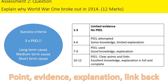Before we look at how to put this question together, we're going to discuss the success criteria — how you'll do well on this question. It's going to be marked out of 12, and to get the highest marks you've got to produce three PEEL paragraphs. A PEEL paragraph is where you start with a clear point, provide evidence and explanation, and then at the end link back to the question. Our three PEEL paragraphs need to cover the long-term, medium-term, and short-term causes of the war.